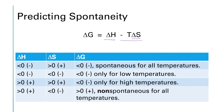Now let's keep delta H negative but make delta S negative as well. Then minus T delta S becomes a positive number. At T equals zero, delta G equals delta H and is negative. But as T gets bigger, that second term grows more and more positive until it wipes out the negative delta H, making delta G positive. So when delta H is negative and delta S is negative, the reaction is spontaneous only at low temperatures.